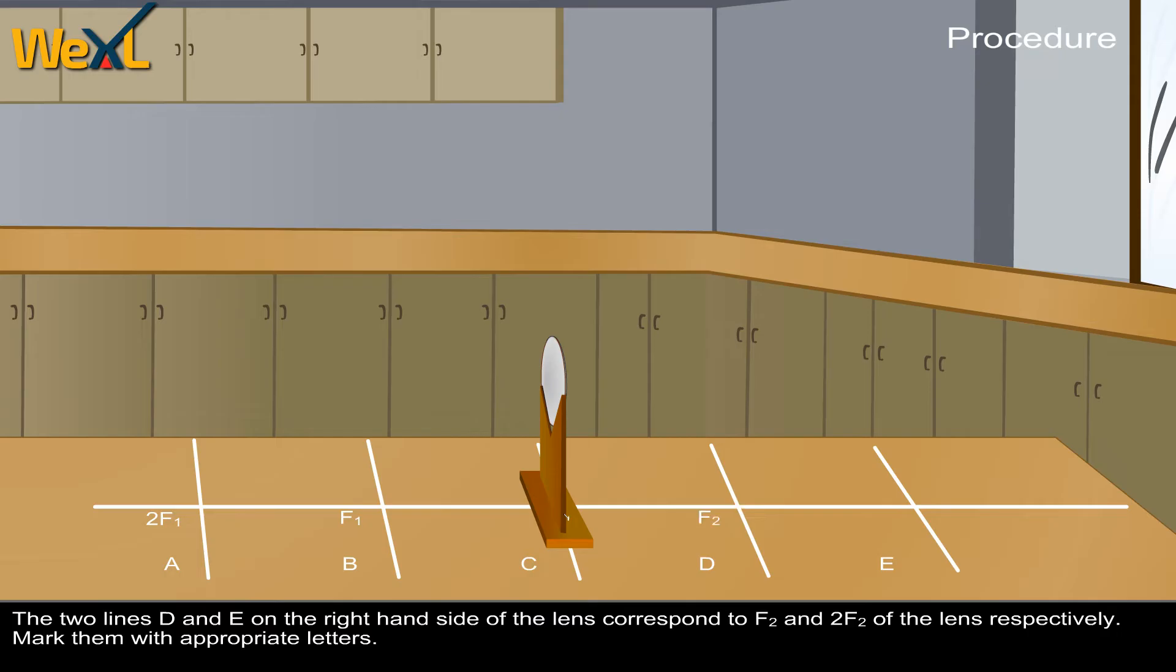The two lines D and E on the right-hand side of the lens correspond to F2 and 2F2 of the lens respectively. Mark them with appropriate letters.